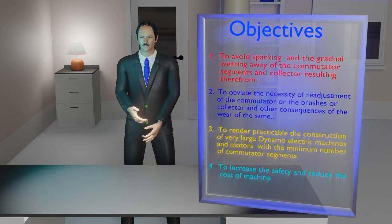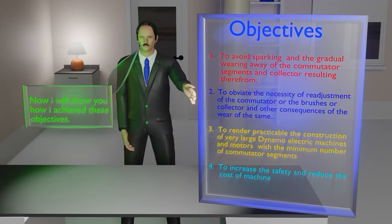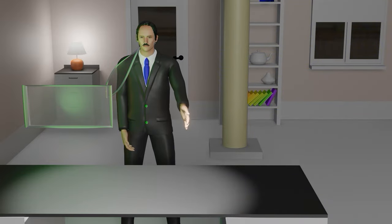Now, we will see how Nikola Tesla achieved these objectives through a unique design of commutator. First, we will see the collector designed by Nikola Tesla.